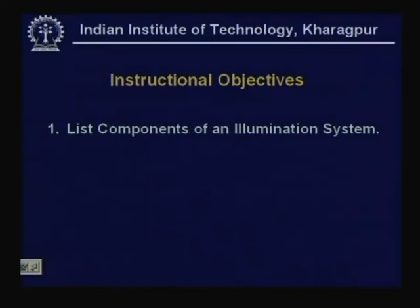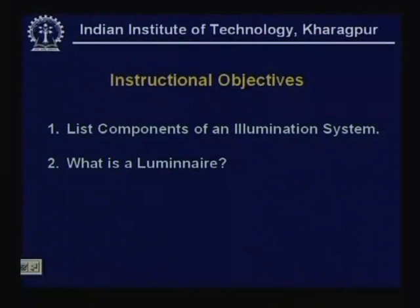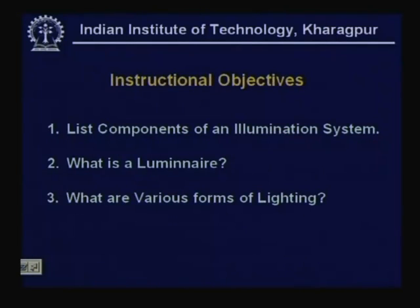The instructional objectives for the lesson include listing the components of an illumination system apart from the source. There is a source which gives certain light flux, but we have to make it available on the task surface or the object of interest. Human eyes are most responsible for acquisition of information — more than 80% of information is acquired through the eyes. In this context, a luminaire becomes important.